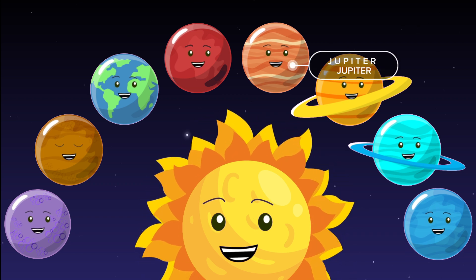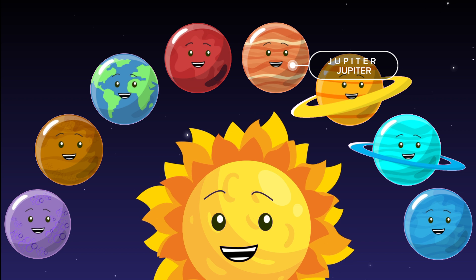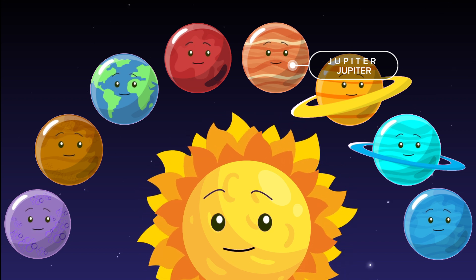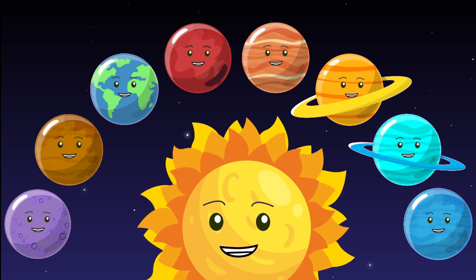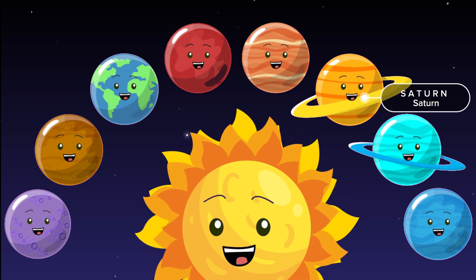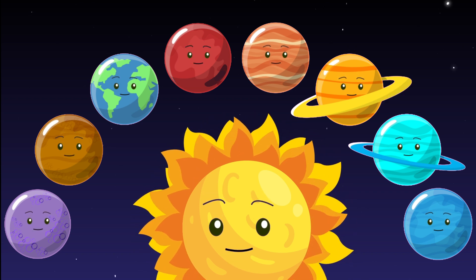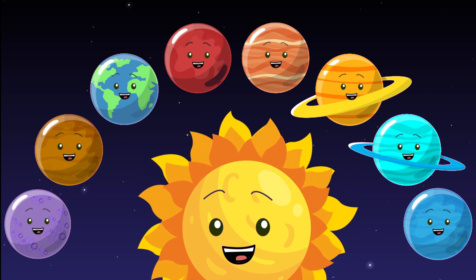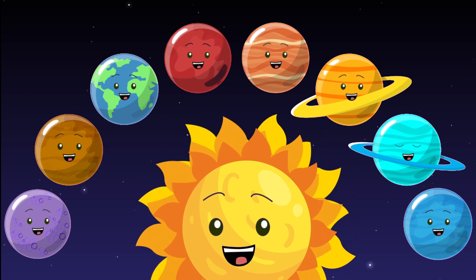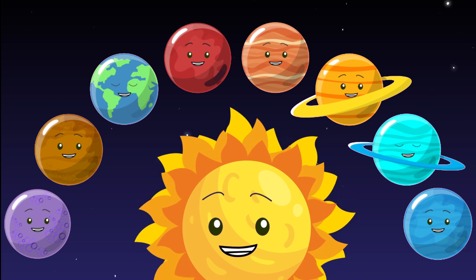J-U-P-I-T-E-R, Jupiter, the biggest planet like a star. S-A-T-U-R-N, Saturn, with shiny rings that twist and turn.